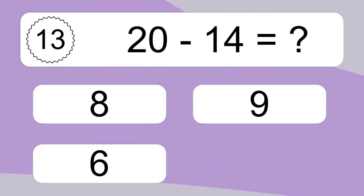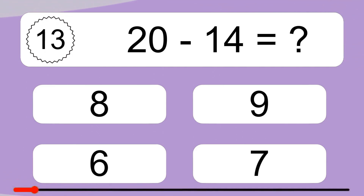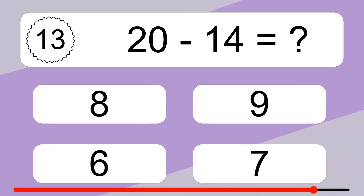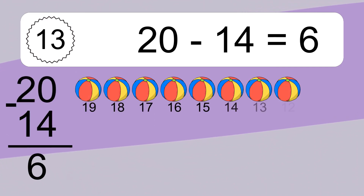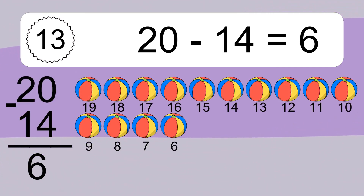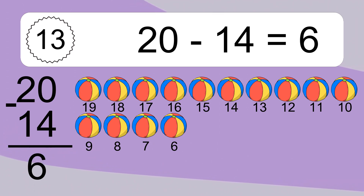20 minus 14 equals what? 20 minus 14 equals 6. Let's count it: 19, 18, 17, 16, 15, 14, 13, 12, 11, 10, 9, 8, 7, 6.